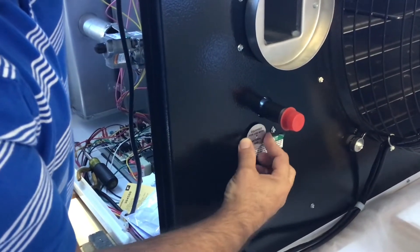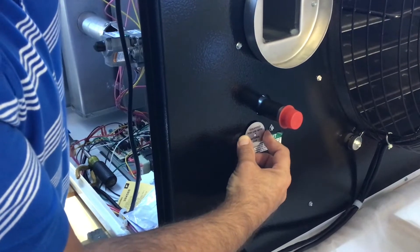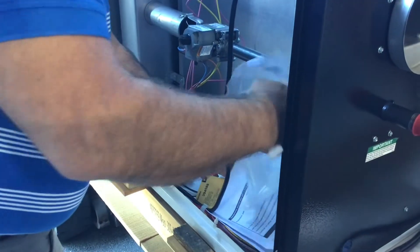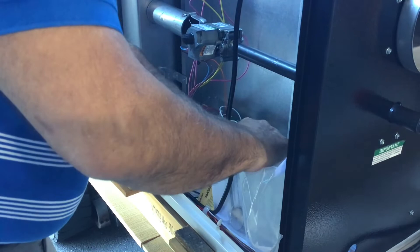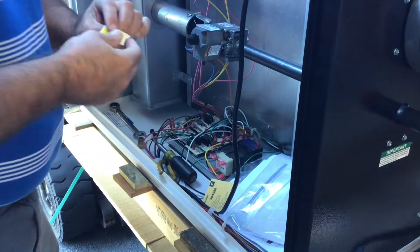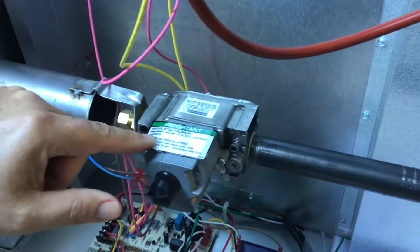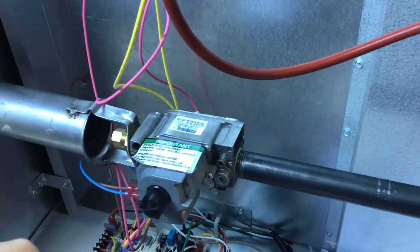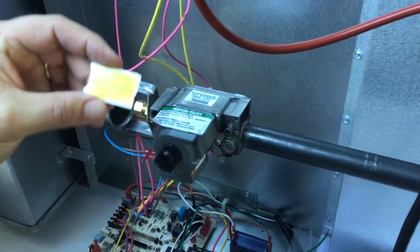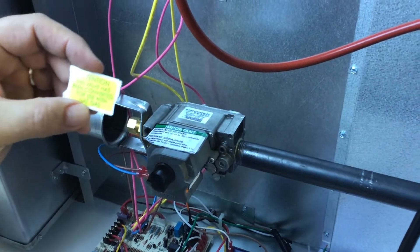Along with that data plate we're going to remove this tag on the gas valve where it says regulated for propane and we're going to put attention this valve has been converted for use with natural gas.